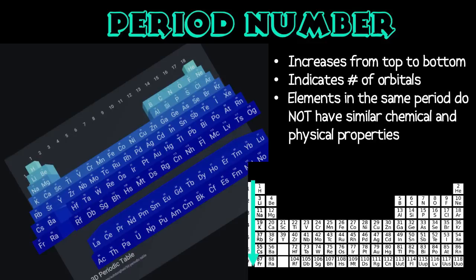Elements in the same period have very different chemical and physical properties, which only become more apparent as you move across the period. For example, magnesium and chlorine are in the same period but are almost completely different from one another, apart from the fact that they have the same number of orbitals.